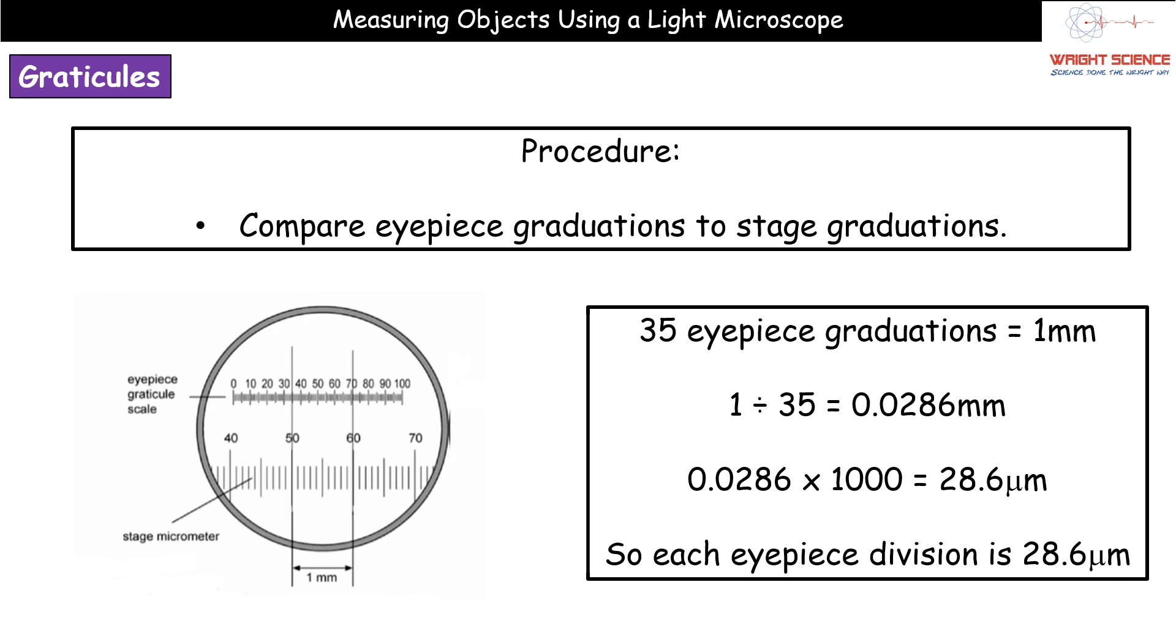What we then do is we need to compare those eyepiece graduations to the graduations on our stage micrometer. If we have a look at my little picture in the bottom left here we can see our eyepiece graticule scale is the one at the top. Here's our stage micrometer at the bottom. We've lined it up and you can see we've used the line for the 50 and we've literally brought that up onto our eyepiece graticule. Then we're going to go from 50 to 60, we're going to use our one millimeter for simplicity. Between our 50 and our 60 is one millimeter of real distance. If we count each of these little markers, we've got 35 is our starting point, 70 is the end point. So 35 from 70 gives us 35 eyepiece graduations in our one millimeter.